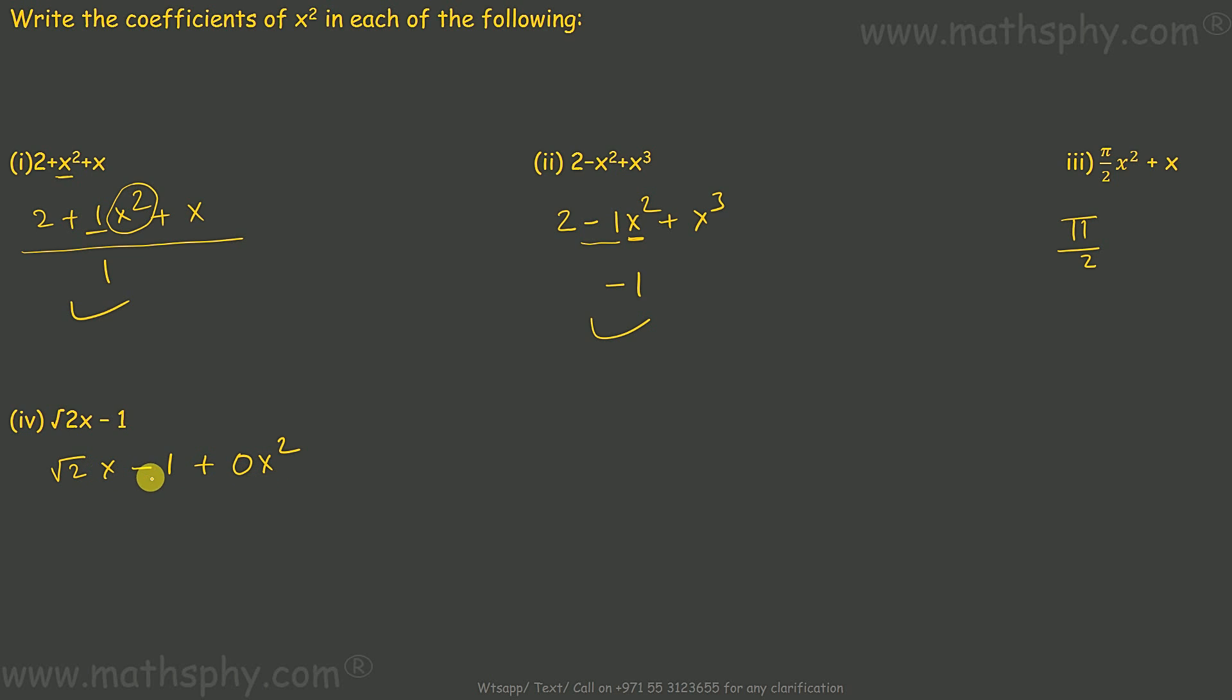√2x - 1 added to 0 does not have any impact. This expression remains intact. In that case, x² has a coefficient of 0 in this expression. x² has a coefficient of 0. All done.